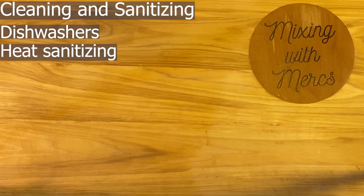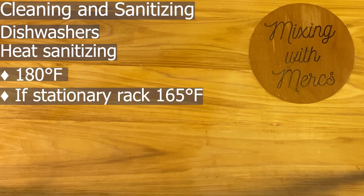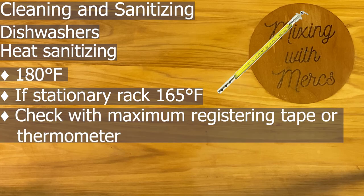For heat sanitizing in a dishwasher, water needs to be 180°F to kill bacteria — a little higher than manual washing due to less contact time. If you have a stationary rack dishwasher — where you slide dishes in and pull the cover down — the temperature requirement is 165°F. Check using maximum registering tape, which sticks onto a dish and turns a certain color at the correct temperature, or with a maximum registering thermometer. These tools indicate the highest temperature the water reaches.